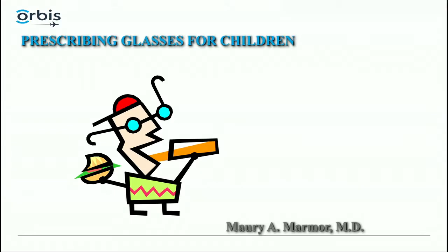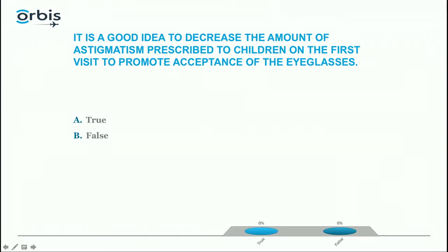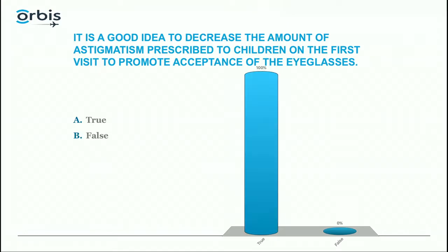This is a lecture I give every year to new residents, and the second and third year residents come back to see it again. It's good information and there's a lot of thinking involved, so we have to go very slowly. The first pre-question: true or false — it is a good idea to decrease the amount of astigmatism prescribed to children on the first visit to promote acceptance of eyeglasses.